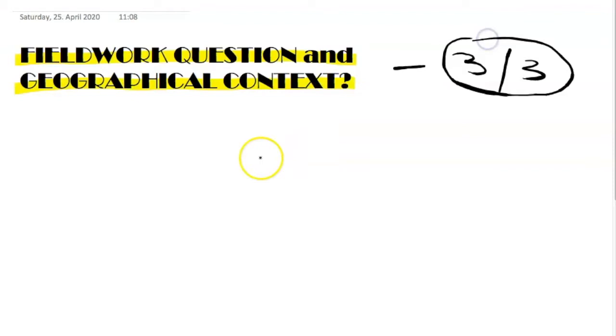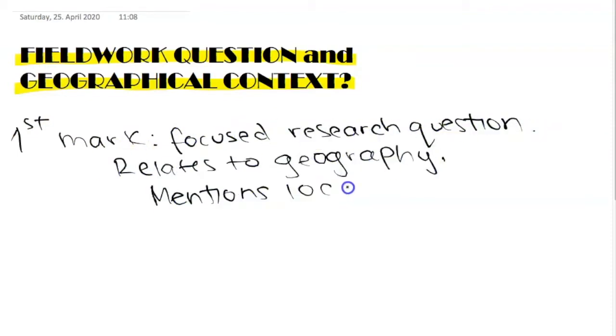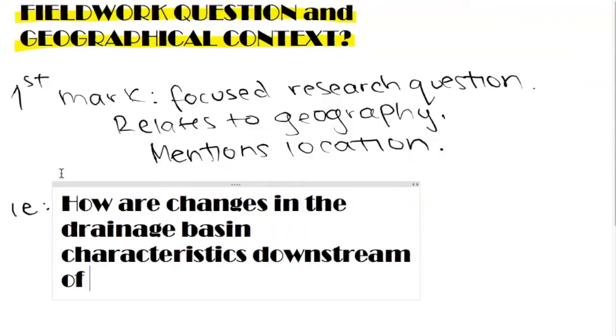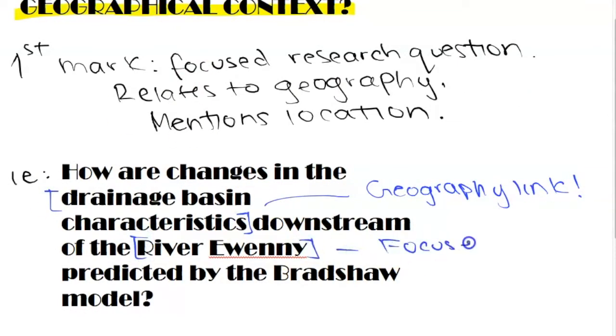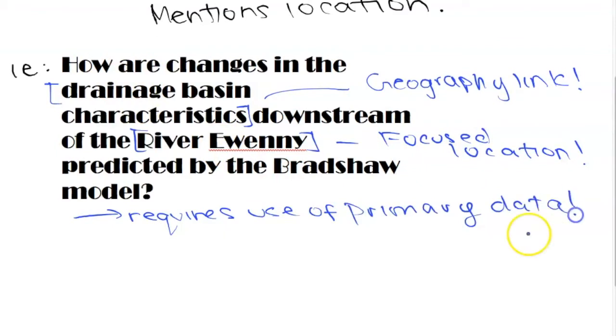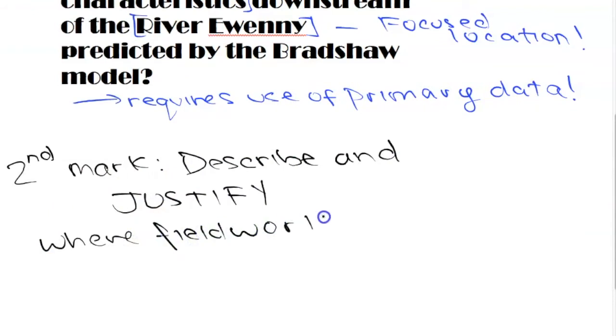I'm going to divide this into the different sections and teach you how you can get the full marks on each section. So the first one is criterion A, fieldwork question and geographic context. To get 3 marks, your fieldwork question has to be narrow and needs to mention a specific scale, a specific area, and needs to clearly require the collection of primary data in order to answer. If your fieldwork question is something like, what is the average velocity of this particular river, that's too narrow and you're not going to have space to really gather as much primary data and to interpret it enough to get the marks that you want. A good fieldwork question would be something like, to what extent does the change in drainage basin characteristics within the river Eweni in Romania correspond to the Broadshaw model? It does imply the need for some sort of primary data gathering and even includes geographic theory.